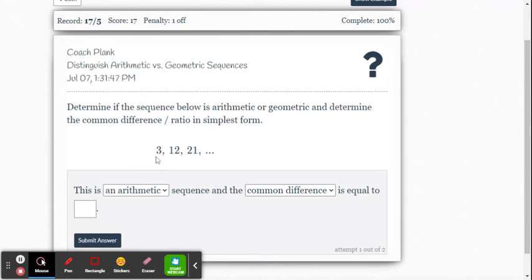Here's our next problem, 3, 12, 21. So 12 minus 3 is 9. 21 minus 12 is 9. So this one has a common difference. So we say it's an arithmetic sequence. Common difference is equal to 9.